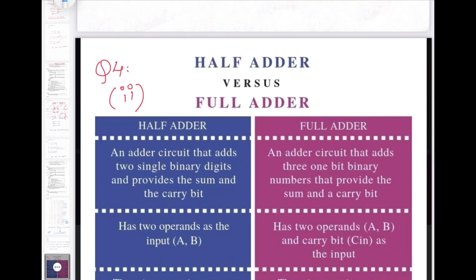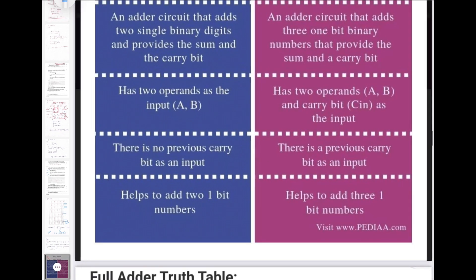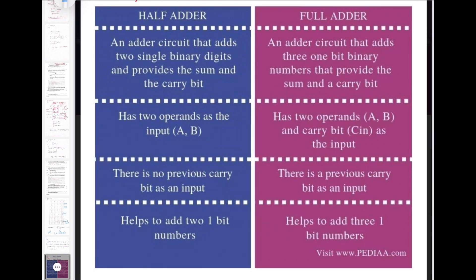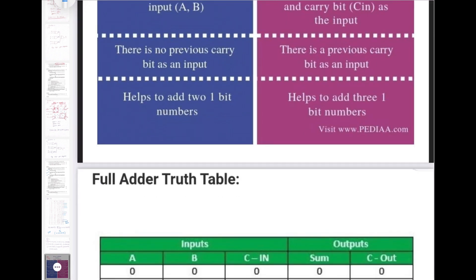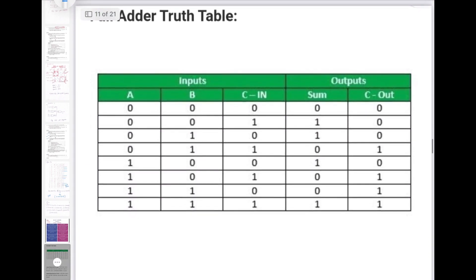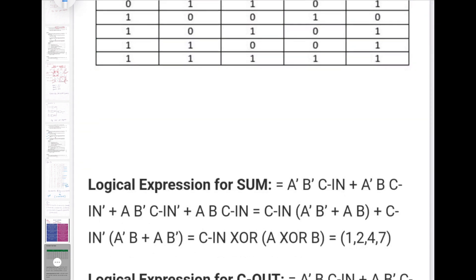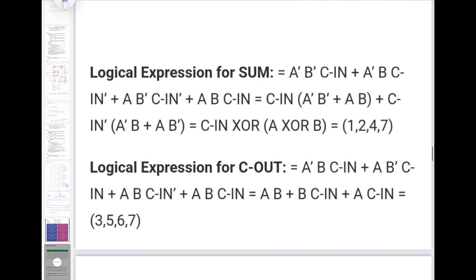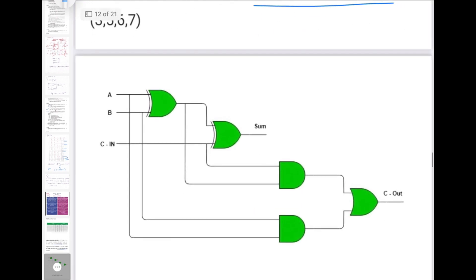Question number 4 part 2 asks about full adder differences. These are the differences for a full adder — you can write any two points from this table. This is the truth table for the full adder, and these are the expressions for sum and carry. Writing only the expression is also acceptable. This is the circuit diagram for the full adder.